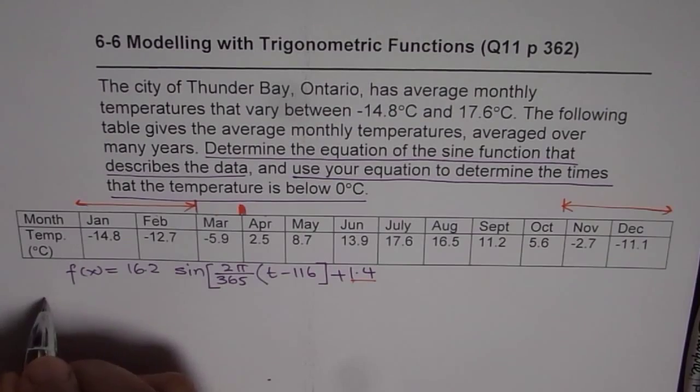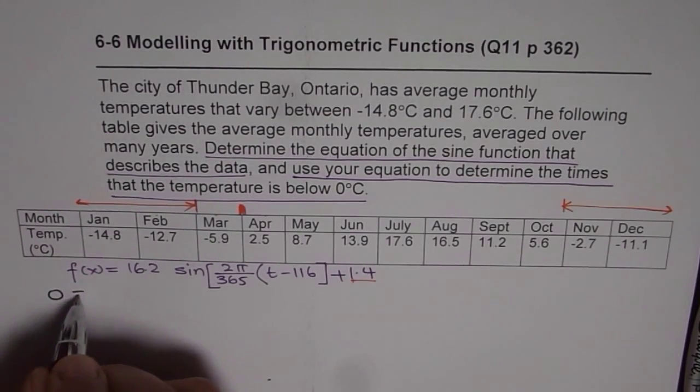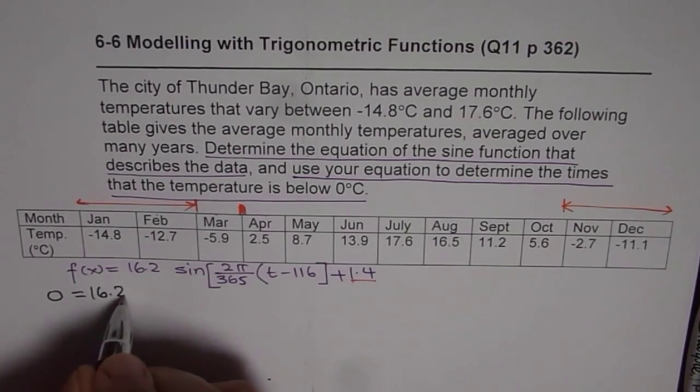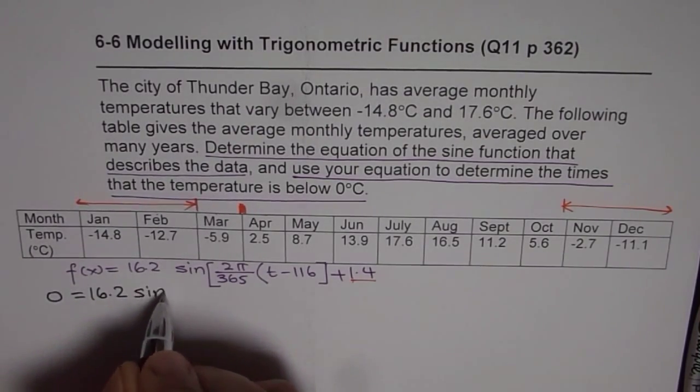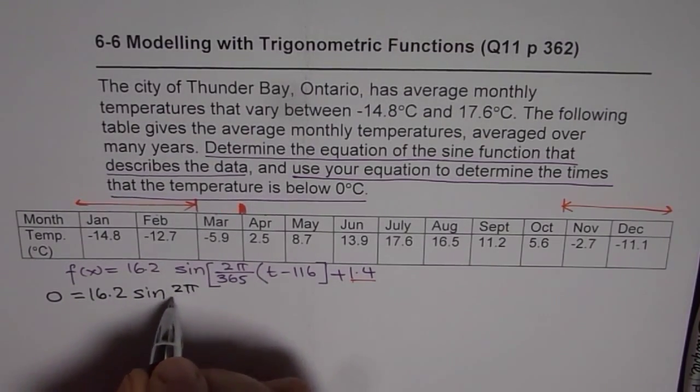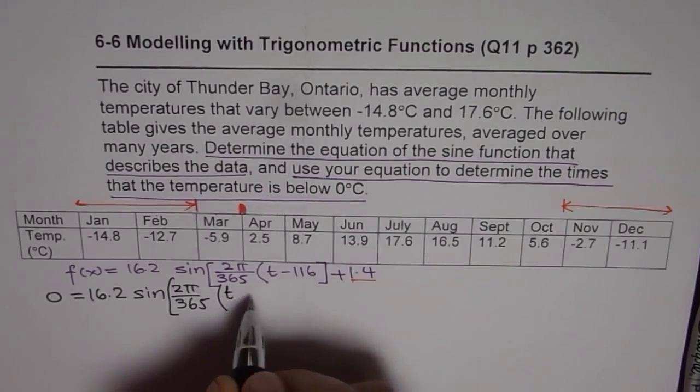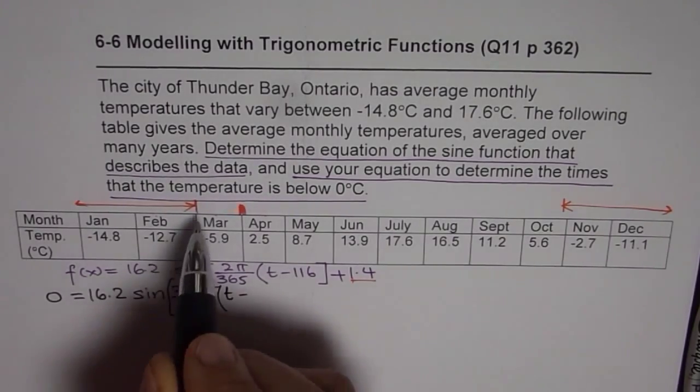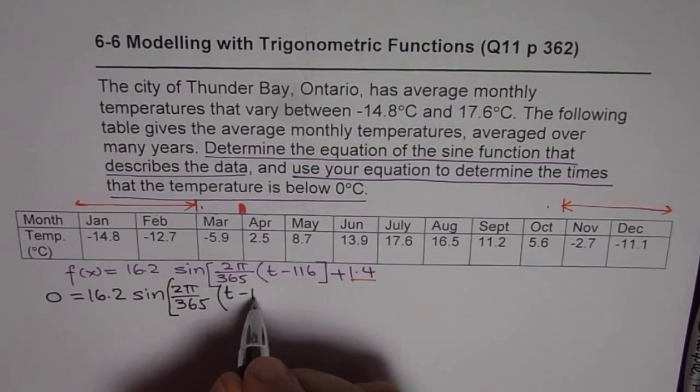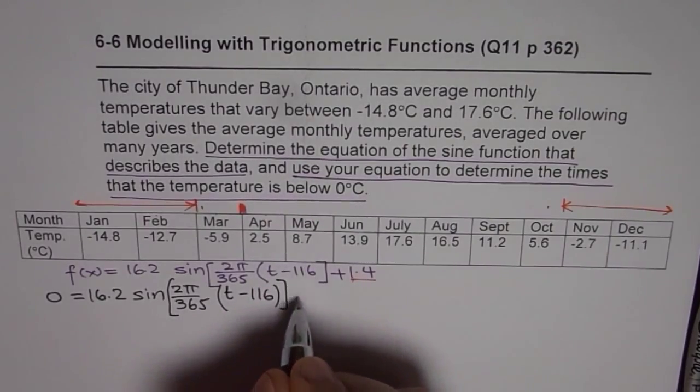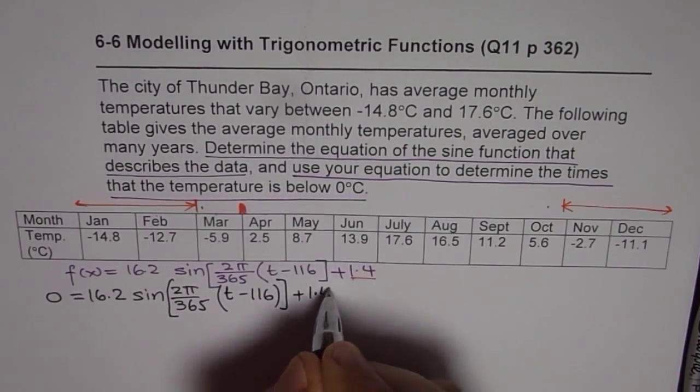So I will use this space to answer. So I am writing slightly smaller. 0 equals to 16.2 sine of 2 pi over 365 in brackets. We need to find time when we get 0. So somewhere here and somewhere here. These are the two times which we need to figure out. Plus 1.4.